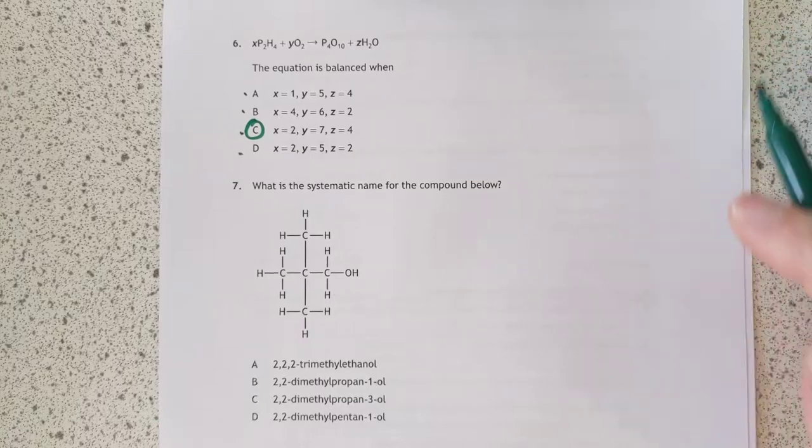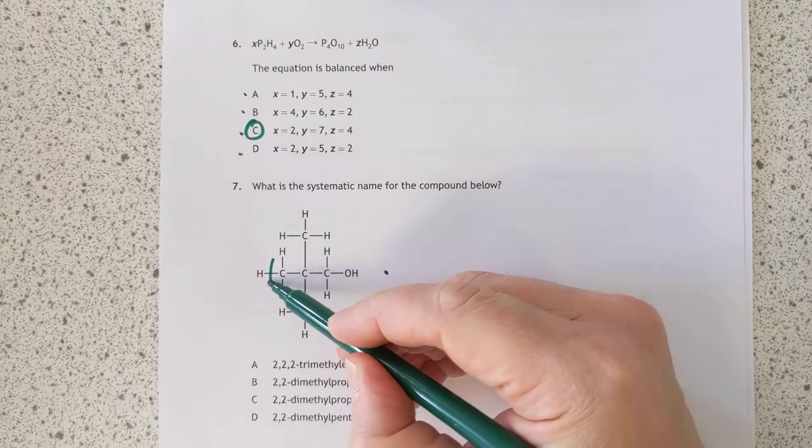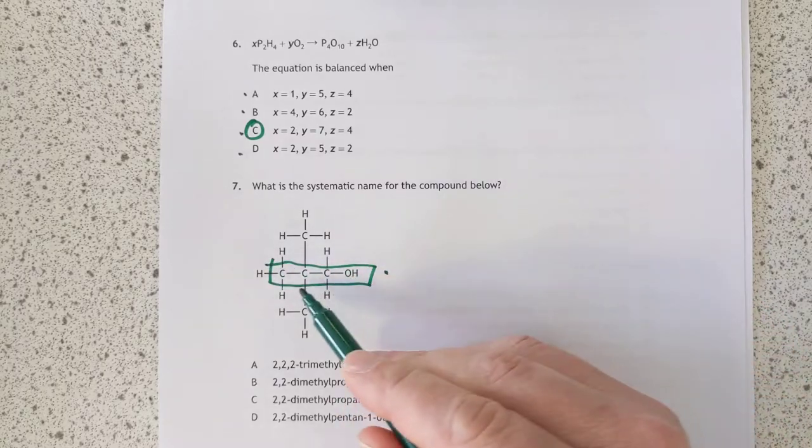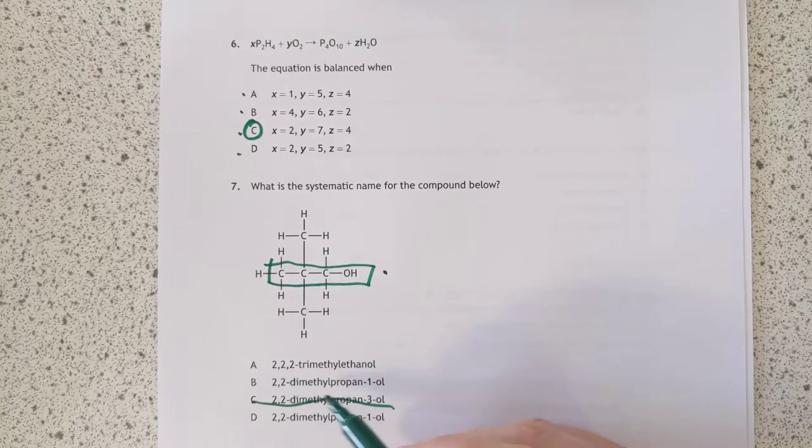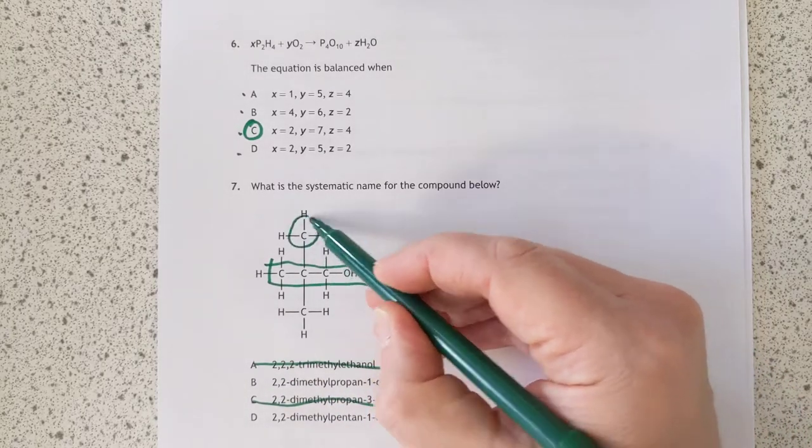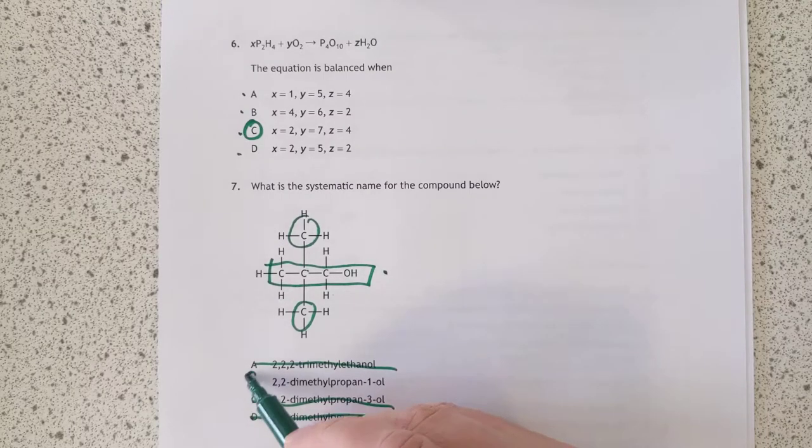Number seven. What is the systematic name? This compound here is propanol. Technically speaking, it's propan-1-ol. Does that help us? Yes, it does. We can chuck out that, and we can chuck out that. And there are two methyl branches. They're both on the second carbon, so it's 2-2. Chuck out that one as well. Oh, that's an easy one. It's just that.